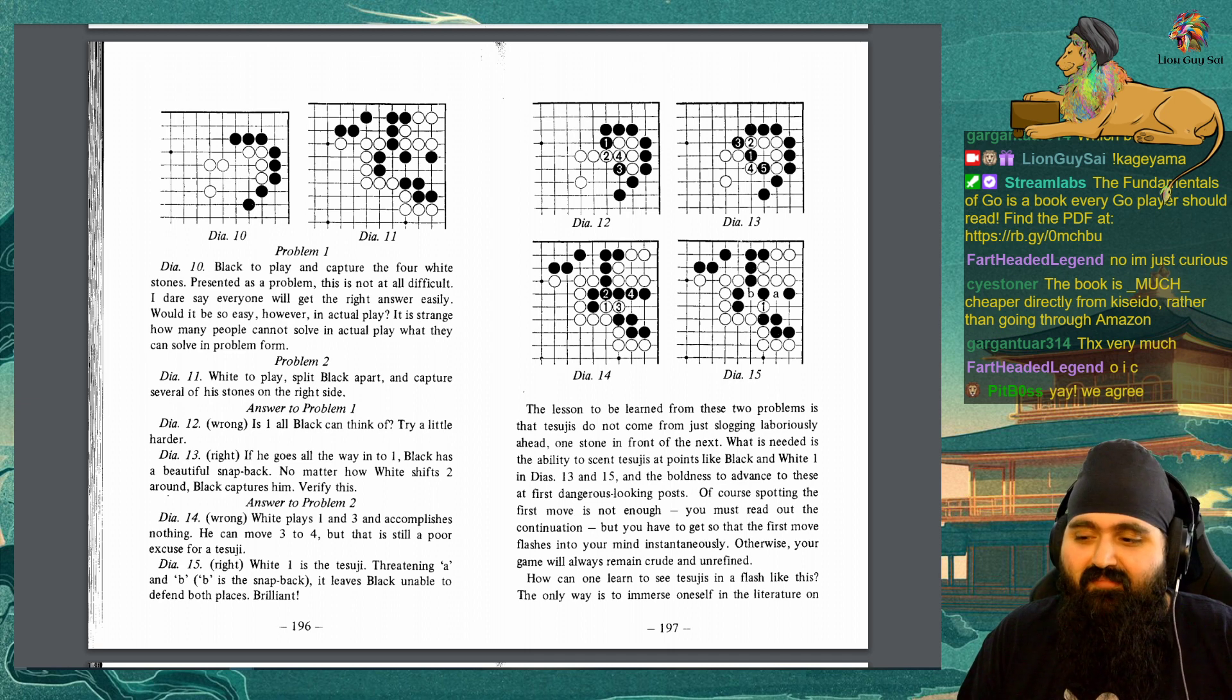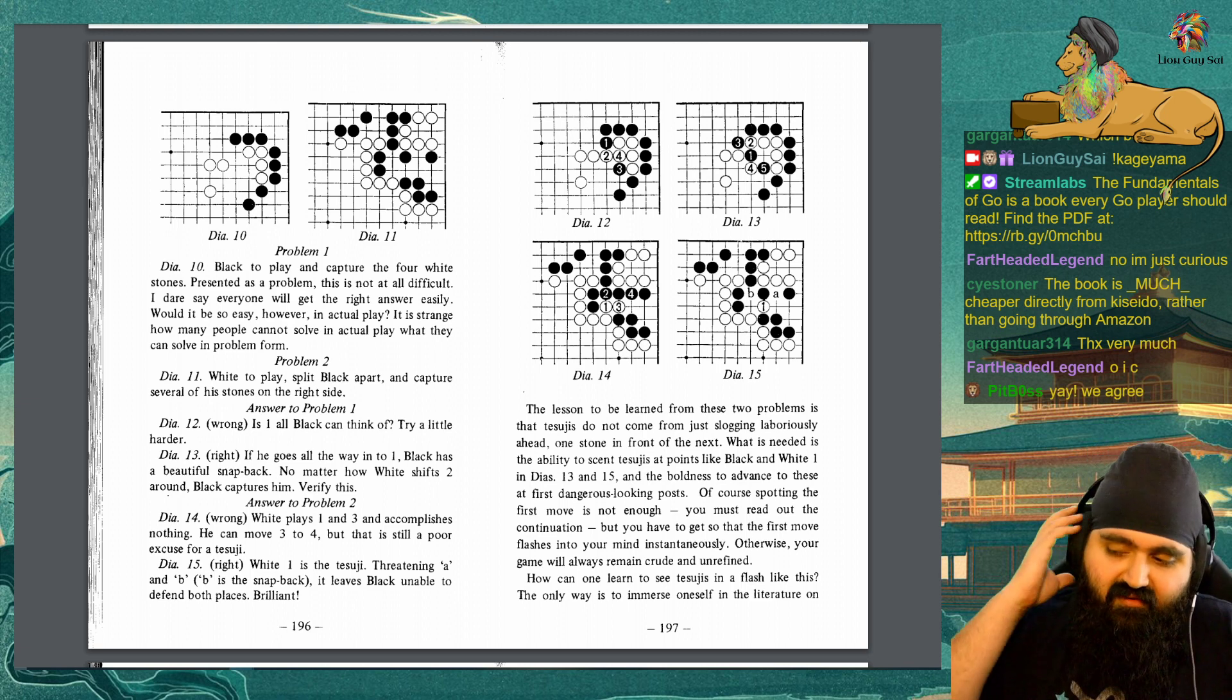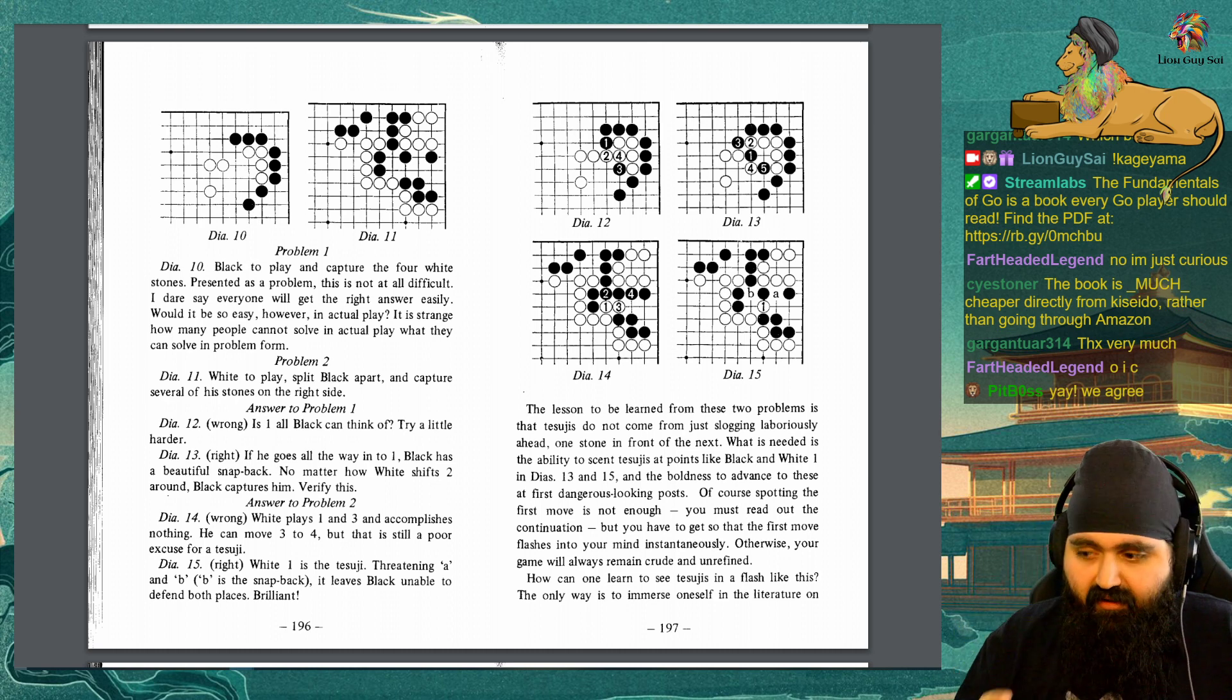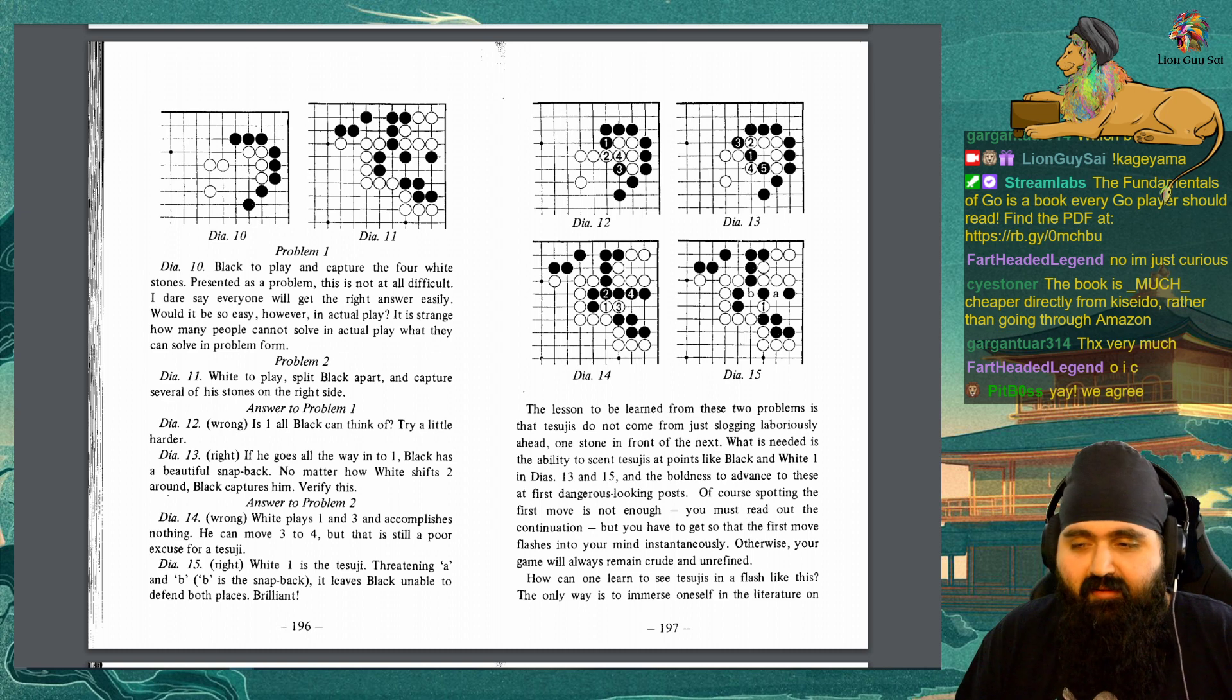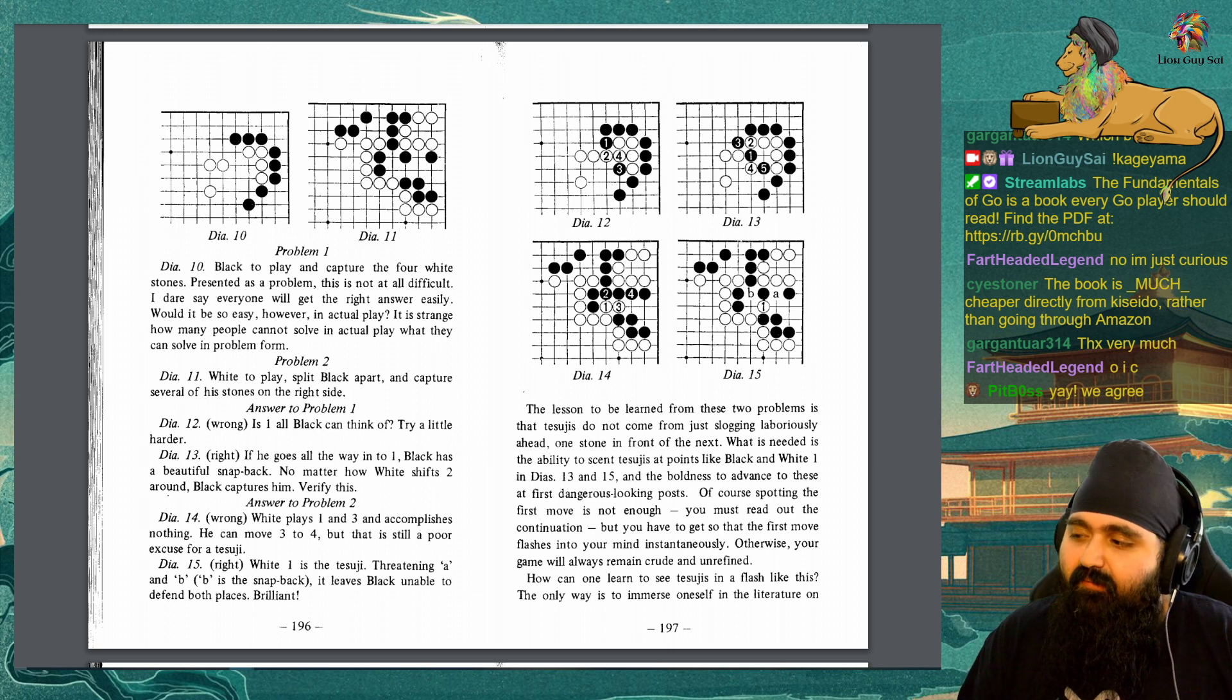Answer to problem 2, Diagram 14: Wrong. White plays 1 and 3 and accomplishes nothing. He can move 3 to 4, but that is still a poor excuse for a tesuji. Diagram 15: Right. White 1 is the tesuji, threatening A and B. B is the snapback. It leaves black unable to defend both places. Brilliant. The lesson to be learned from these two problems is that tesuji do not come from just slogging laboriously ahead, one stone in front of the next.